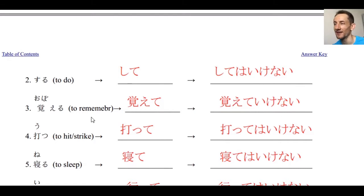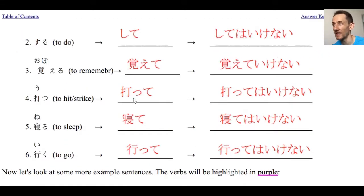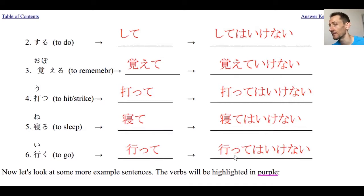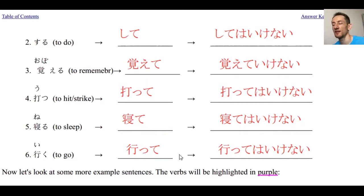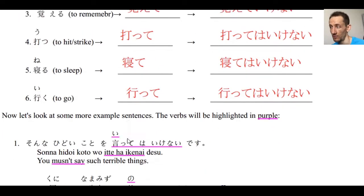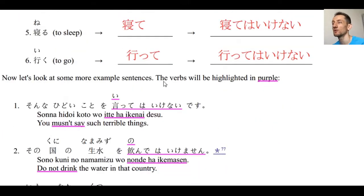Number four: utsu becomes utte, utte wa ikenai. Number five: neru becomes nete, nete wa ikenai. And number six: iku becomes itte, itte wa ikenai. So just append wa ikenai to the te-form of the verb — type 1, type 2, or type 3 — and you get 'must not do that verb.' It's against the rules; it's forbidden.